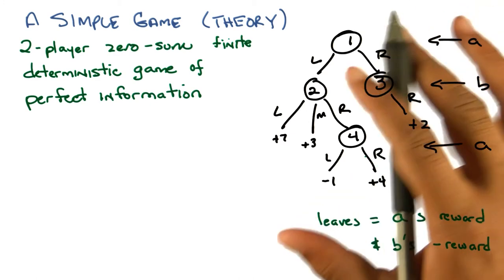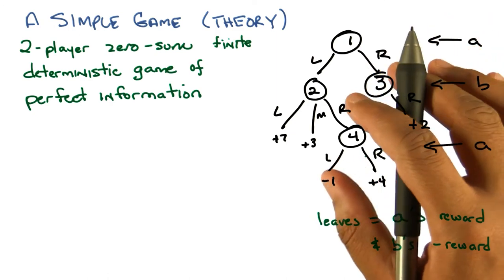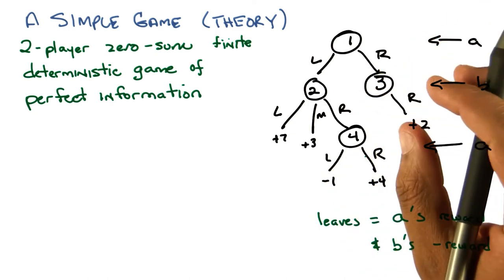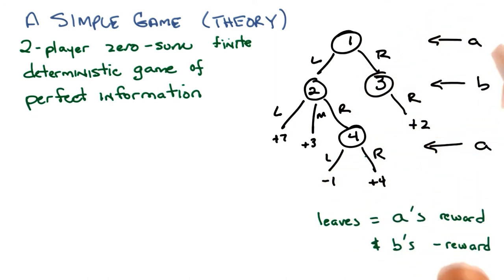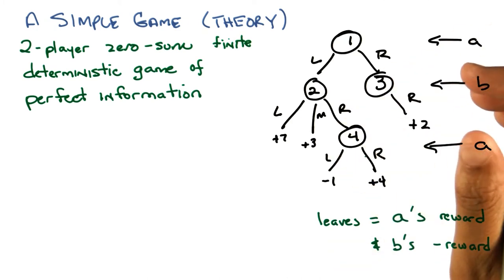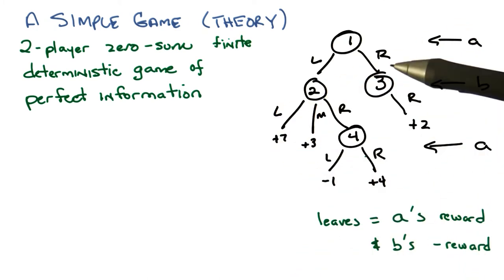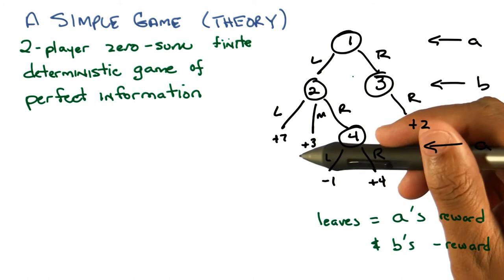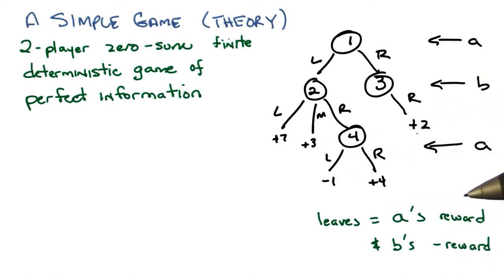Okay. So this is about the simplest or at least the least complicated game that you can think about. A two player, zero sum, finite deterministic game of perfect information. You know, basically, I can look at this tree, I know everything I need to know, and I can make decisions about what action I might want to take in order to maximize my reward. Good.